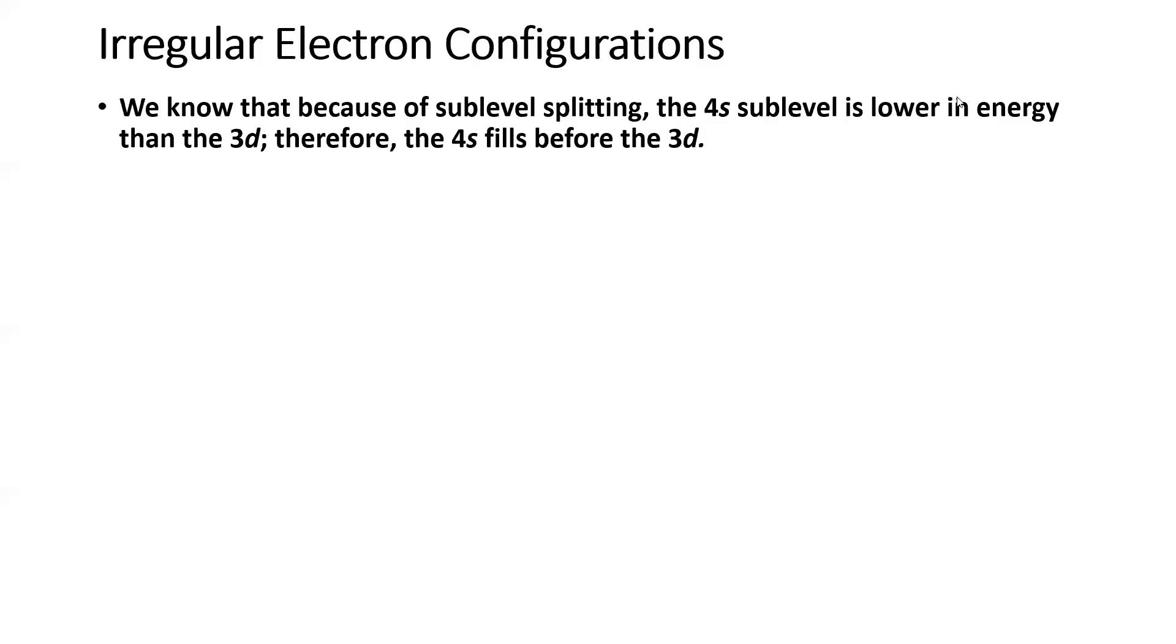So the 4s fills before the 3d, and you see that in your periodic tables. But the difference in energy is not that large, and as a result, we get some irregular patterns, and we'll also notice what happens when we discuss the transition metal cations as well.